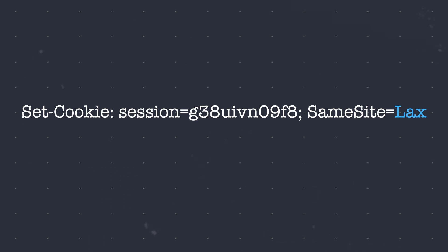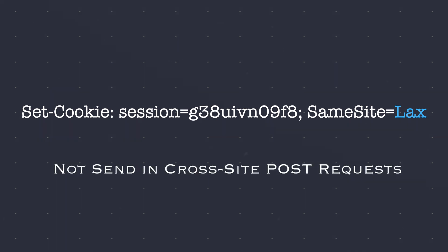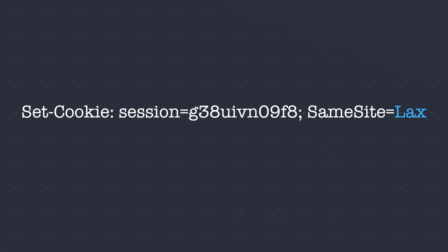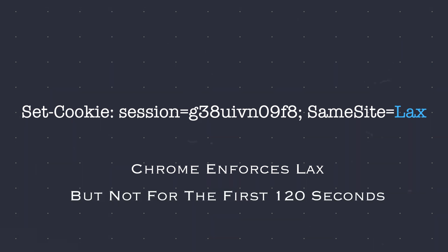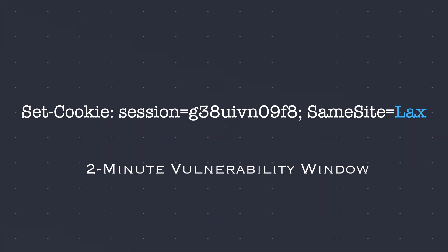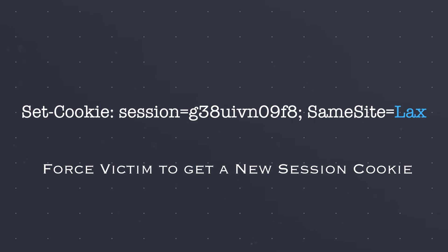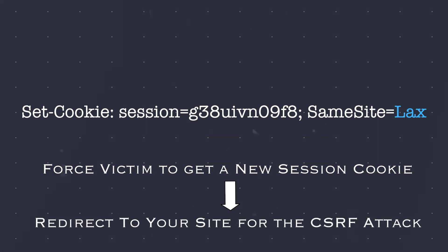Cookies with lax same-site restrictions usually aren't sent with cross-site POST requests, but there are exceptions. When no same-site attribute is set, Chrome applies lax restrictions by default. But there is a catch: Chrome doesn't apply this for the first 120 seconds on top-level POST requests, to prevent breaking single sign-on mechanisms. This creates a two-minute vulnerability window for cross-site attacks. Timing an attack within this window can be impractical. However, if you can force the victim to get a new session cookie — like through an OAuth login — you can refresh their cookie before launching the main attack, then redirect the user back to your site to execute the CSRF attack.